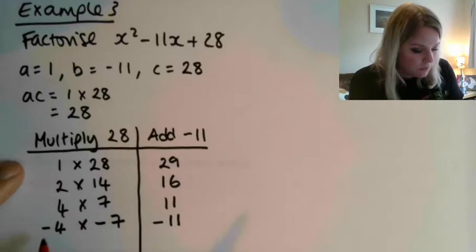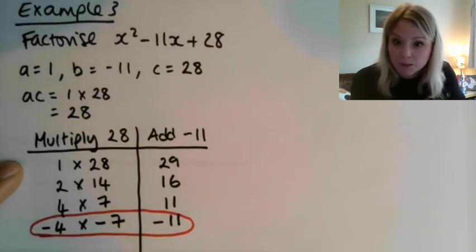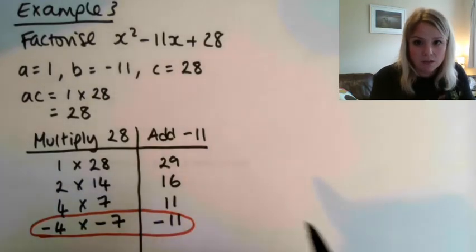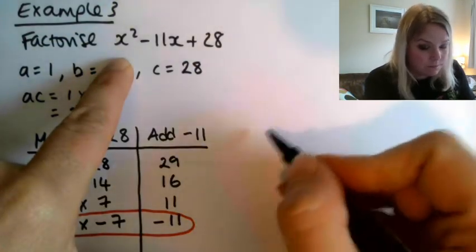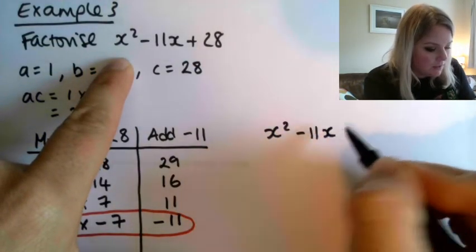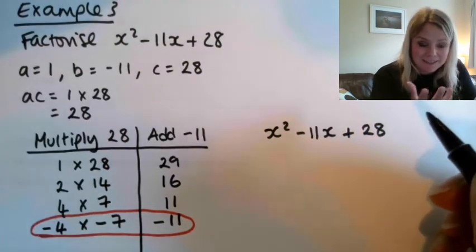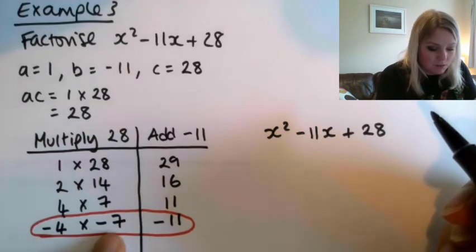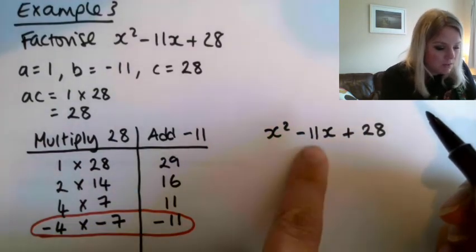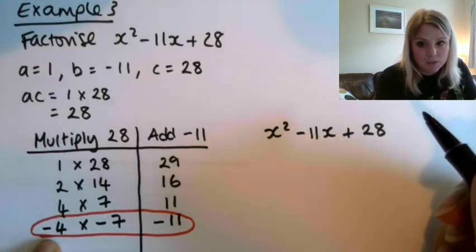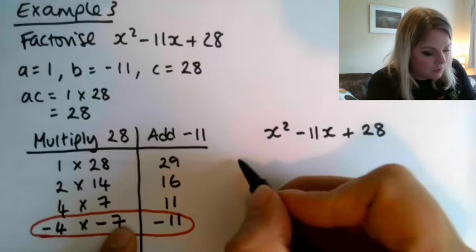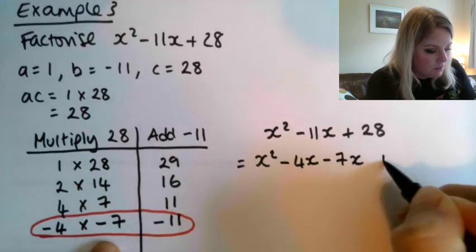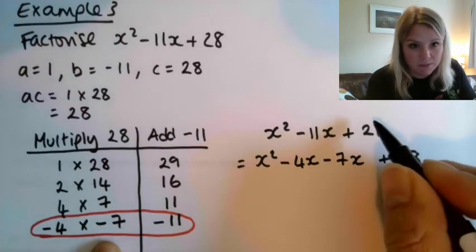Okay, so here's my numbers. Now, if you remember, the next thing we do is write out the equation again. So x squared minus 11x plus 28, and we take this 11x term, and we use these two numbers to split it up. So we change minus 11x into minus 4x minus 7x. So x squared minus 4x minus 7x plus 28, because this still has the same value as that.